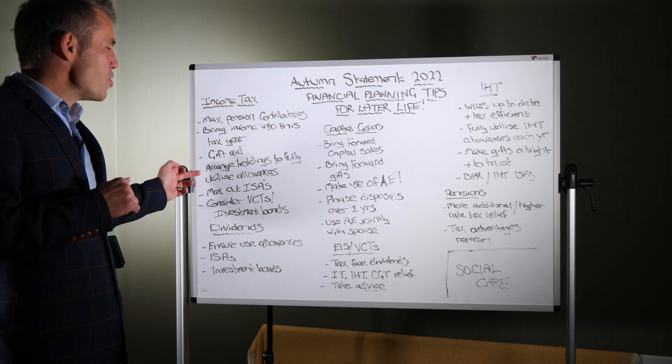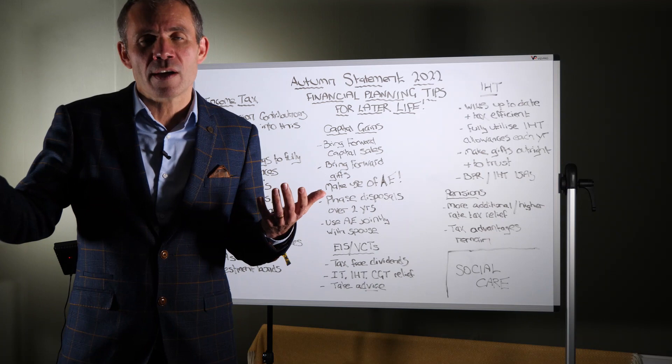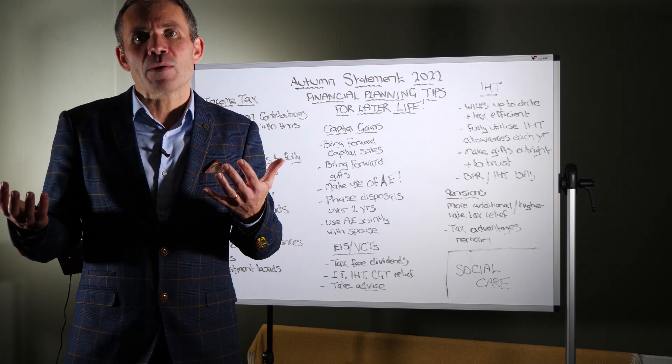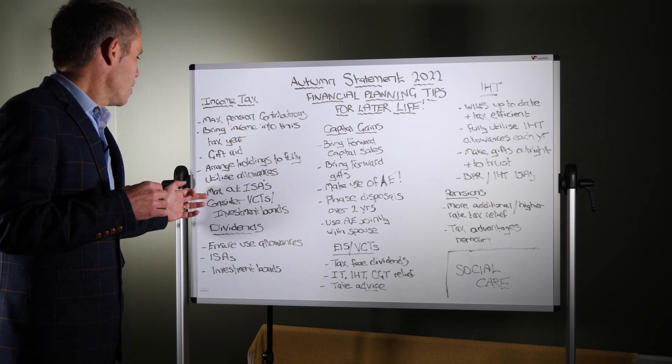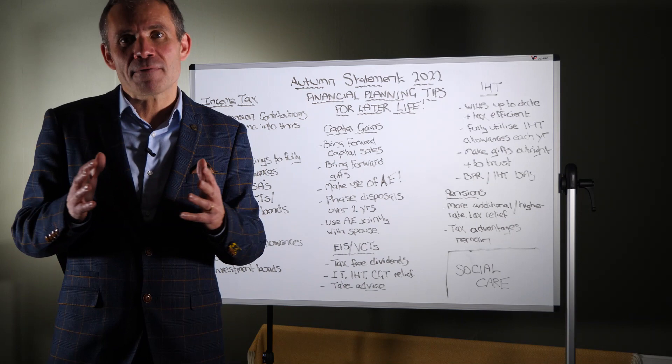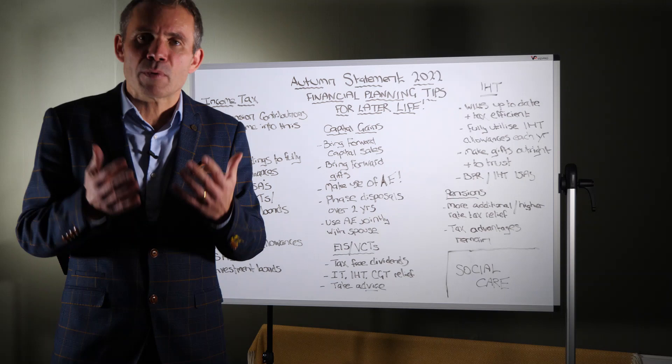Don't forget to arrange your holdings to fully utilise all allowances. And that's especially the case if you're a married couple where potentially one spouse is a non-taxpayer or doesn't pay as much tax as the other. Make sure that you're arranging your assets, your portfolios, your investments in such a way that you're using everybody's allowances and everybody's lower tax bands. Remember to max out the good old ISA, it's been around decades, but you get £20,000 completely tax free for your ISAs and it remains a really effective way of getting money into a tax free environment.